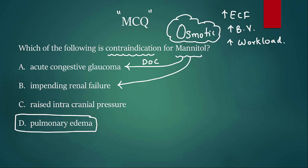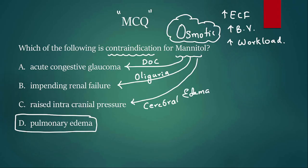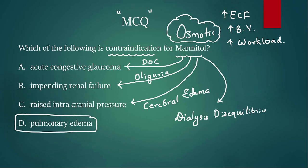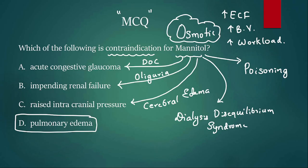Mannitol is also used in impending renal failure — that means when there is oliguria but the kidney is still working. Mannitol is also used in raised intracranial pressure; it is the drug of choice for cerebral edema. Apart from that, mannitol is also used in dialysis disequilibrium syndrome, a problem where dialysis is done too quickly. It is also used to manage poisoning — when we want to remove poison quickly using a diuretic. So to repeat: drug of choice for acute angle-closure glaucoma and drug of choice for cerebral edema.